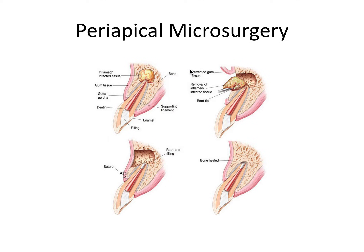Periapical microsurgery is the technical term for the complete surgical endodontic treatment process. In conventional root canal treatment, the goal was to access the pulp space from the coronal aspect, creating an access preparation, then instrumenting and sealing the canal through that access opening. In surgical root canal treatment, the approach is the exact opposite — access is achieved through the bone by the apex of the tooth, and the canal is accessed, instrumented, and sealed from that apical access. For this procedure, the coronal aspect is already sealed with gutta percha, sealer, and a restoration on top.